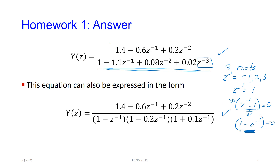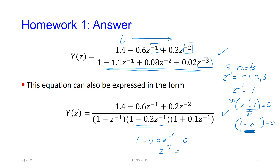Notice: if 1 minus 0.2 Z to the minus one is a factor, it means the root — set it to zero — so Z to the minus one would have been equal to 0 divided by 0.2. One over 0.2 is 5. So in other words, if you were using this form to find the factors, this particular factor would have been Z to the minus one minus 5.